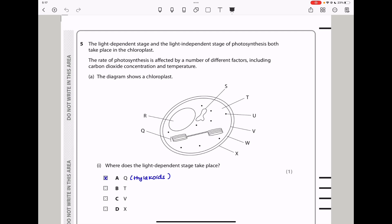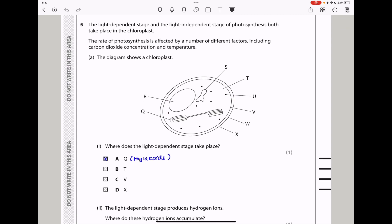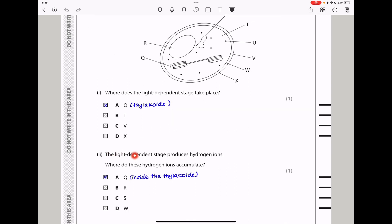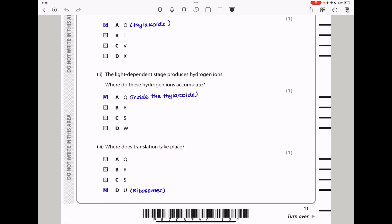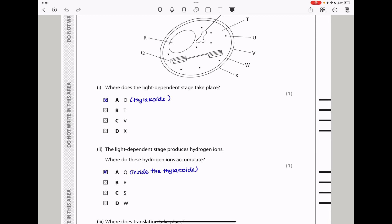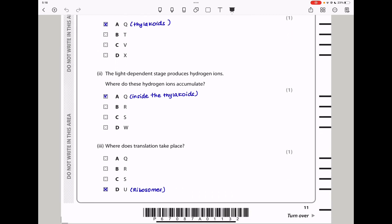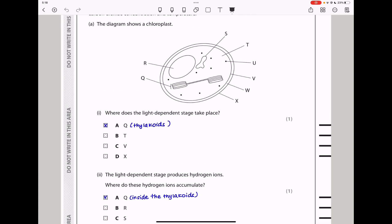Let's continue to question 5. The light-dependent stage and the light-independent stage of photosynthesis both take place in the chloroplast. The rate of photosynthesis is affected by a number of different factors, including carbon dioxide concentration and temperature. The diagram shows a chloroplast, which is that. They say where does the light-dependent stage take place? It takes place in the thylakoids, which are those, so the answer should be A. The light-dependent stage produces hydrogen ions. Where do these hydrogen ions accumulate? The hydrogen ions will accumulate within the thylakoids, so again the answer is A. Down here they say where does translation take place? Translation is part of protein synthesis and it should take place in the ribosomes. So the answer should be A. These tiny particles here are the ribosomes.